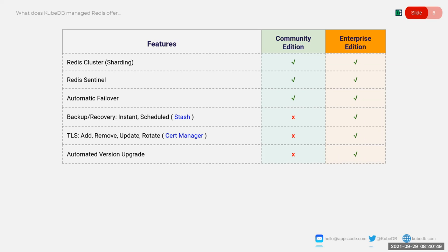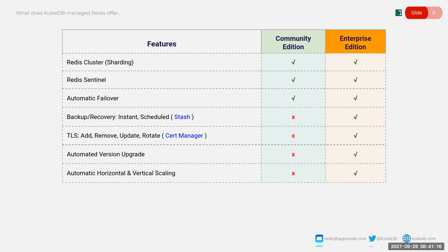We also have support for automated version upgrades — this is also in our enterprise edition. With a single command we can easily upgrade our database. We have support for horizontal and vertical scaling — increasing or decreasing your nodes, or increasing your CPU or memory. And if you started with some configuration and later realize you need to optimize it, you can do that with our reconfiguration feature, which is also available in our enterprise edition.